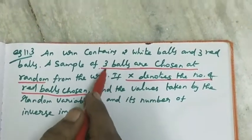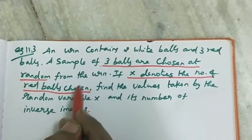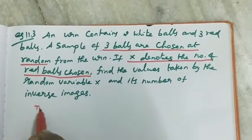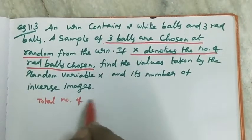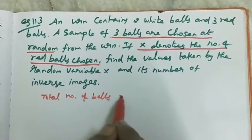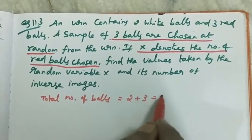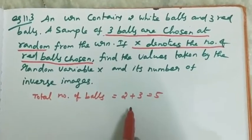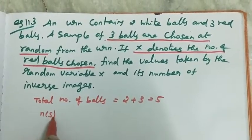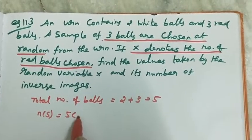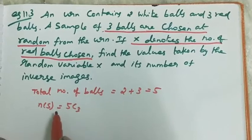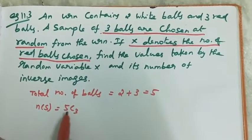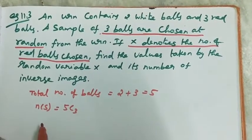So, how many balls are drawn? 3 balls. The random variable x counts red balls. Total number of balls equals 2 plus 3, which is 5. Out of these 5 balls, we take 3. So n(S) equals 5C3.